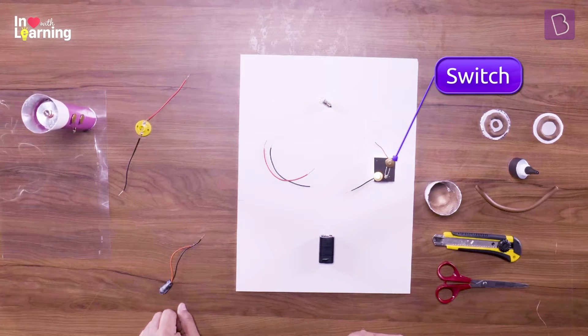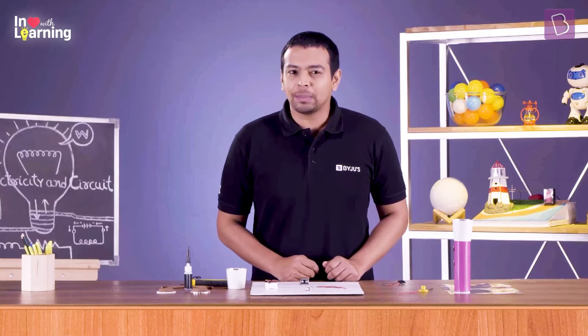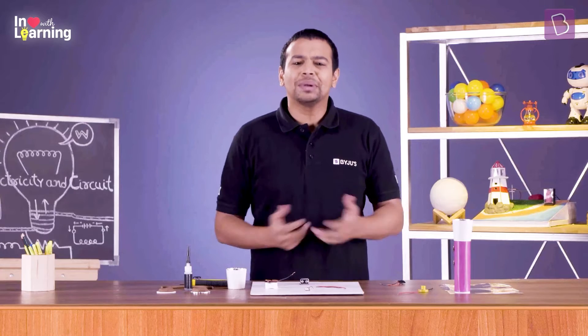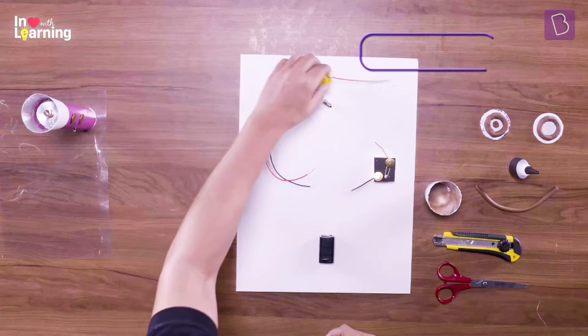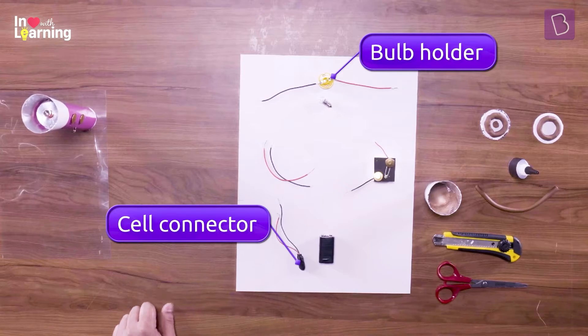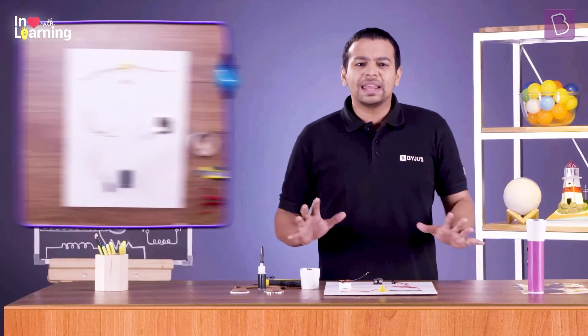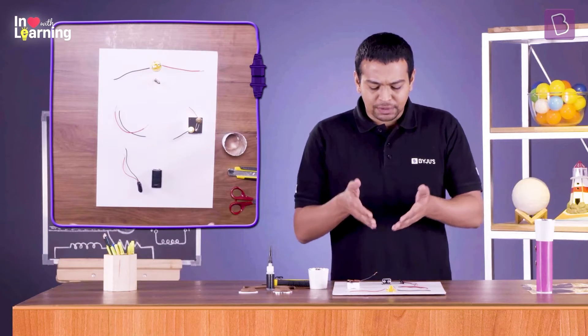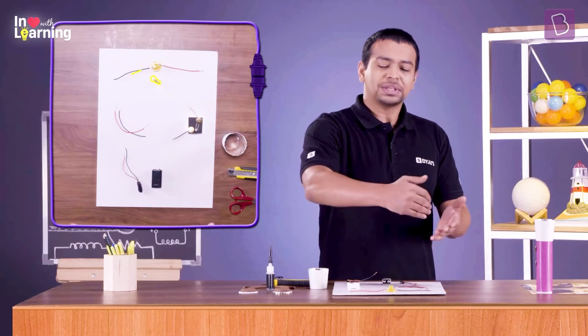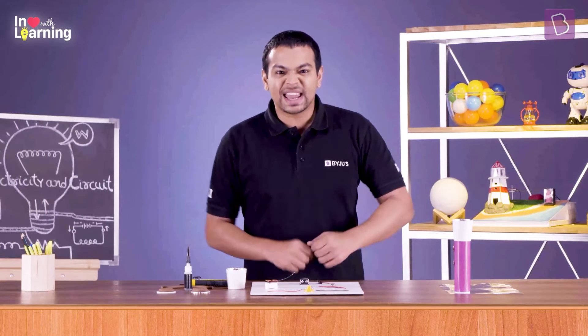Here I have a makeshift switch as well. I need a few more things to help me build our own version of a simple electrical circuit, like a bulb holder and a cell connector. How do we go about doing this? Very simple: just make sure that the source is connected to the switch, which connects to the bulb, which connects back to the source. Let's get at it.